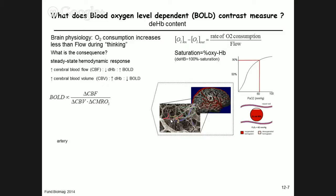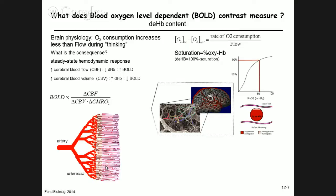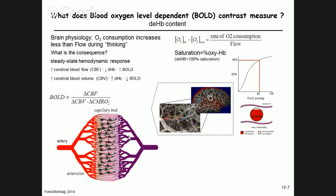I'll illustrate with a cartoon what happens during brain activation. You're tired on a Friday afternoon with your eyes closed, and suddenly something interesting is said — you open your eyes. What happens in the visual cortex? We have blood vessels supplying tissue via arteries, arterioles branching into the capillary bed, where astrocytes and neurons reside, then venules combining into veins — that is the functional unit in terms of blood flow.